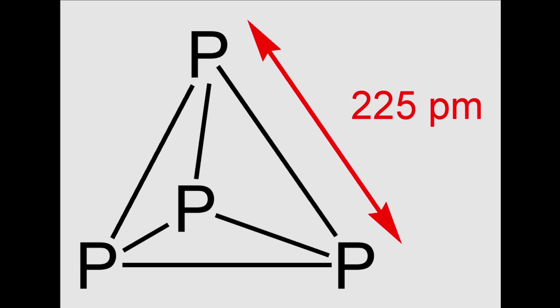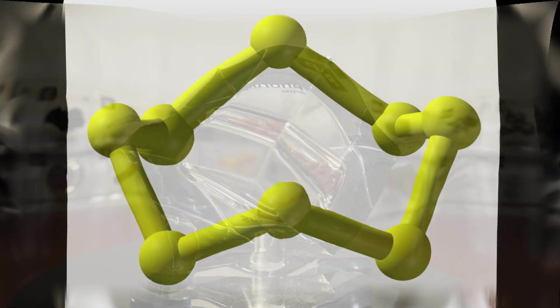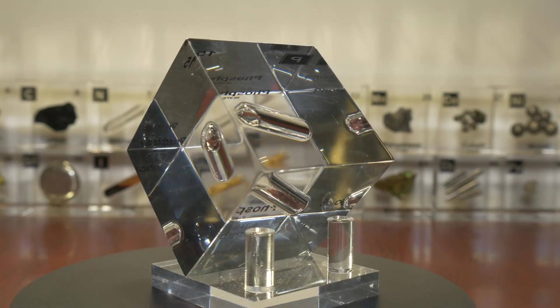Another exception is sulfur S8 which is ring shaped, and of course the noble gases. At sufficiently high temperatures these larger molecules break down into diatomic molecules.